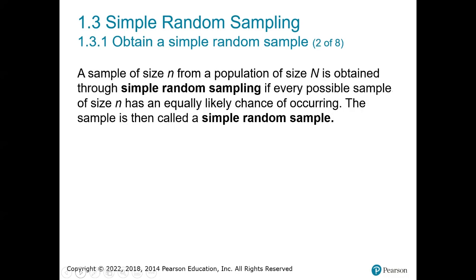A sample of size n from a population of size N is obtained through simple random sampling if every possible sample of size n has an equally likely chance of occurring. The sample is then called a simple random sample. We want to make sure that we use randomness to get our sample, and there are a few ways to do that.